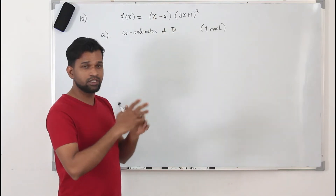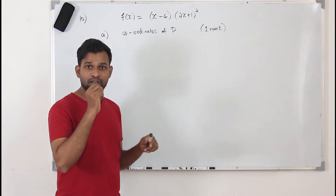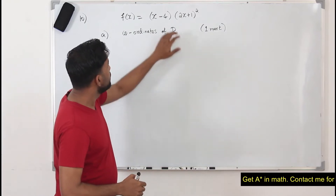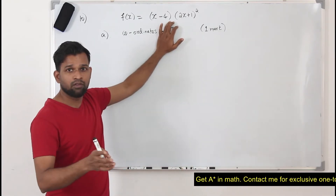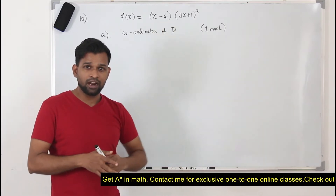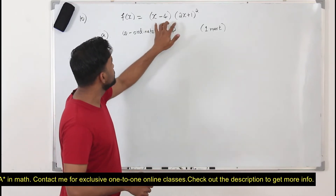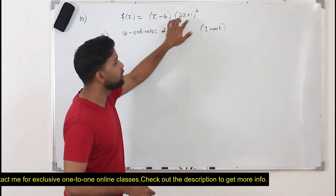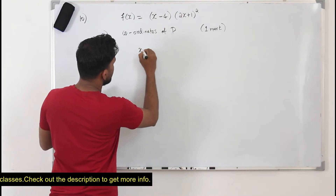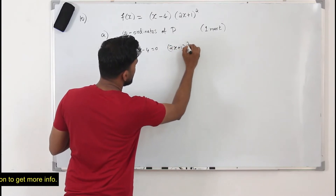When you read the question carefully, they say the curve touches the x-axis at P and crosses the x-axis at Q. We have learned in pure math 1 about sketching cubic graphs. When you sketch cubic graphs, we need to solve the cubic function first — equate them to zero separately. So you will have x minus 4 equals 0 and 2x plus 1 whole squared equals 0.